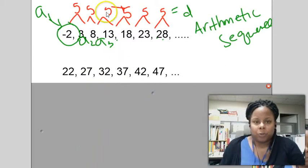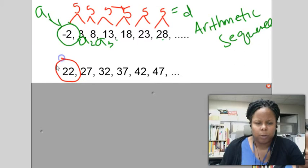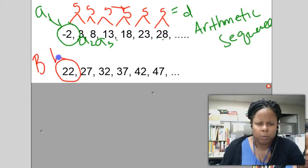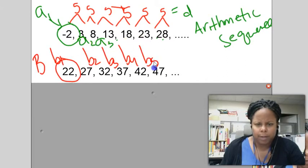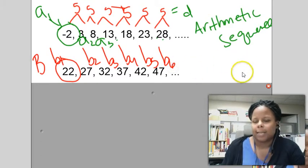Okay, here we have the initial term is, as you can see, 22. So we're going to call this sequence B. So this is B1, B2, B3, B4, B5, B6, and the dot dot dot means it can go on forever and ever.